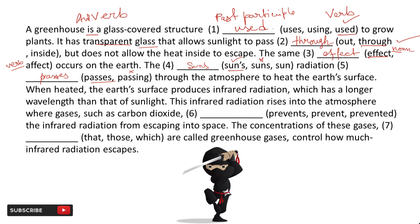Next, 'the infrared radiation rises into the atmosphere where gases such as carbon dioxide [blank] the infrared radiation from escaping into space.' The options are: prevents, prevented, prevent. 'Prevented' is wrong. Now, 'gases' is the subject — it is plural. But there is a comma after 'carbon dioxide', and due to subject-verb agreement with this structure, the verb must be singular. So 'prevents' is incorrect — the correct answer is 'prevent'. This is a very important point where many people make mistakes.